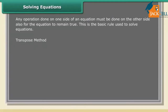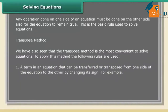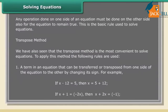Transpose method: a term in an equation can be transferred or transposed from one side of the equation to the other by changing its sign. For example, if x − 12 = 5, then x = 5 + 12. If x + 1 = −2x, then x + 2x = −1.